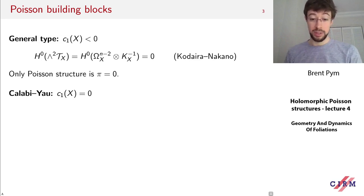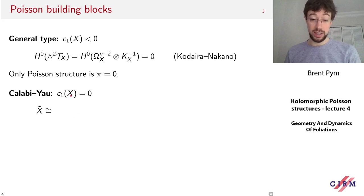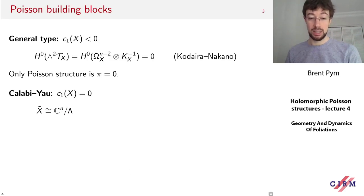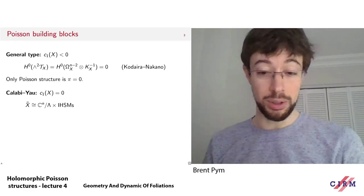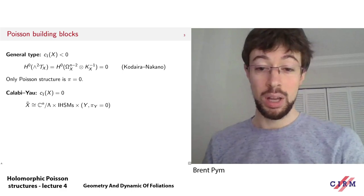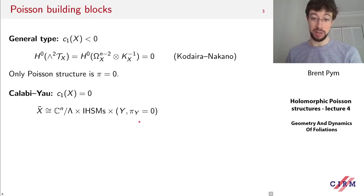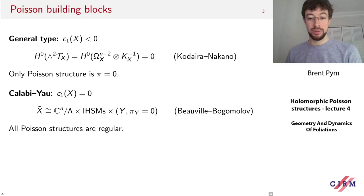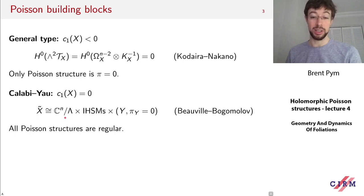In the Calabi-Yau case, where the first Chern class is zero, the Bogomolov-Beauville decomposition theorem says that any compact Kähler manifold with trivial first Chern class has an étale cover X-tilde which decomposes as a product of a torus, irreducible holomorphic symplectic manifolds, and Calabi-Yau manifolds that cannot admit Poisson structures. Consequently, all Poisson structures on such a manifold are automatically regular, and we have a decent understanding of what they look like from tori and IHSMs discussed last time.